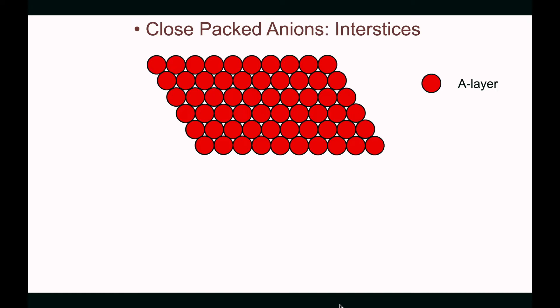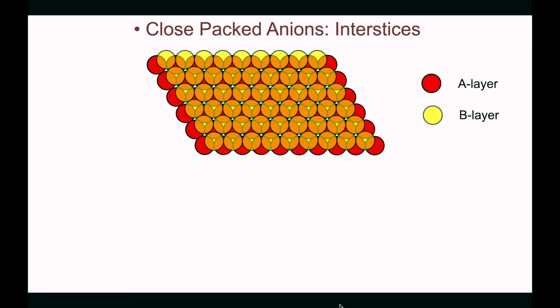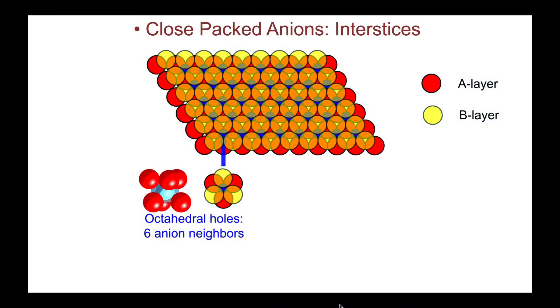Shown is a close-packed layer of anions. As we stack close-packed layers on top of each other, we generate between the layers holes, or interstices — potential sites that a cation can occupy. Shown here is AB stacking of anions, and in between them are the interstices. Labeled in blue are the octahedral holes. These holes have six surrounding anion neighbors.